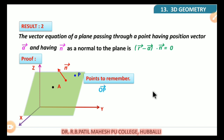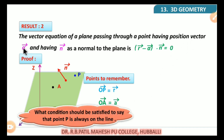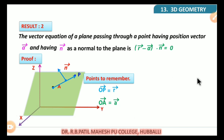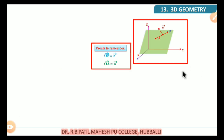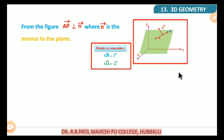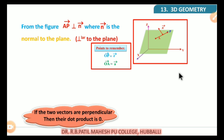Remember some points here. OP vector is the position vector of point P, which can be taken as R vector. OA vector is the position vector of point A, which can be taken as small a vector. Now, the condition that must be satisfied for point P to always lie on the plane is that the two vectors must be perpendicular to each other. Therefore, AP vector is perpendicular to n vector — where n vector is the normal to the plane.